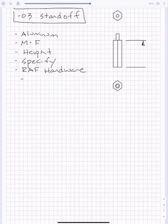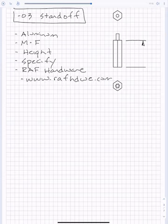Now, the first thing you'll do is go to their website. Do a Google search on RAF hardware, go to the manufacturer's website, look through their product literature, and find a part number for a standoff.